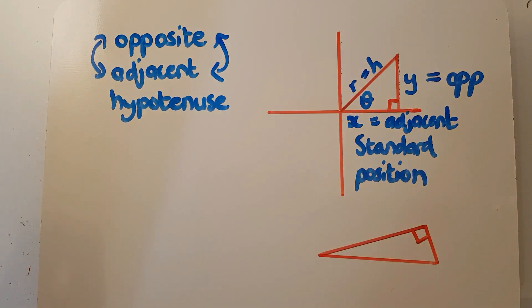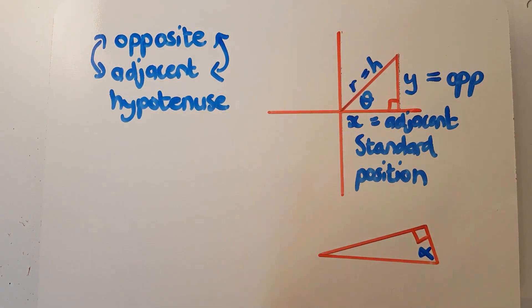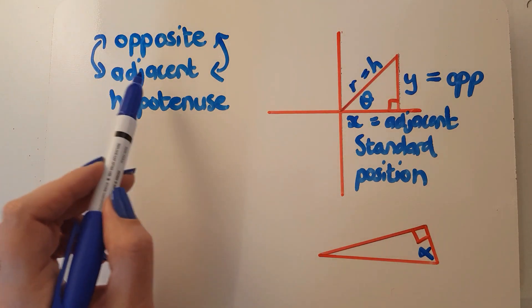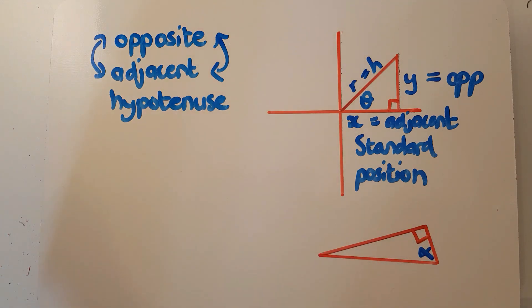But if you draw a triangle, and it's not in standard position, so here, let me draw an alpha in there, then these words are more helpful. So if I wanted to do my sin, cos, and tan of alpha, then I would be using opposite-adjacent and hypotenuse to be able to describe the various sides.